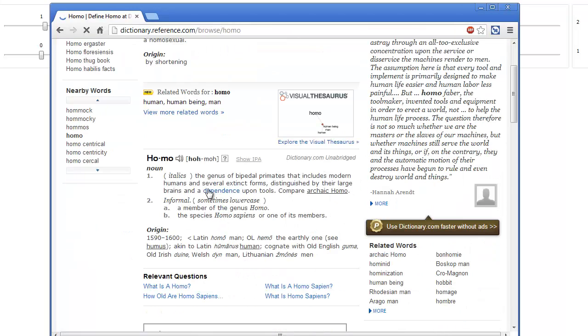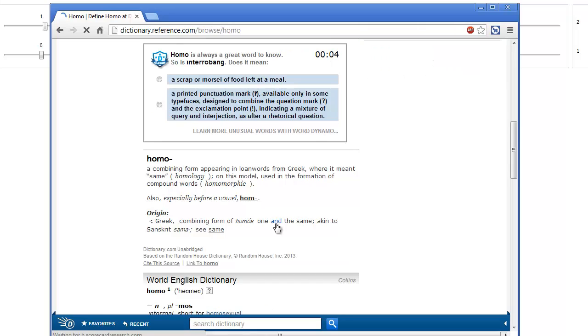Dictionary.com. The genus of primates that includes modern humans and several extinct forms. That's not what I want. I want... let's see. Combining form appearing from Greek. Oh, this is good.